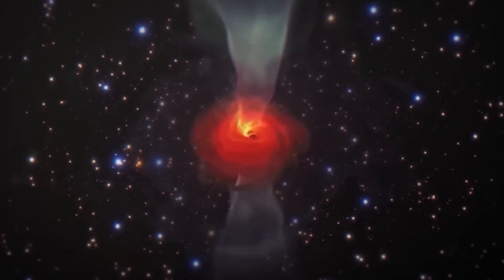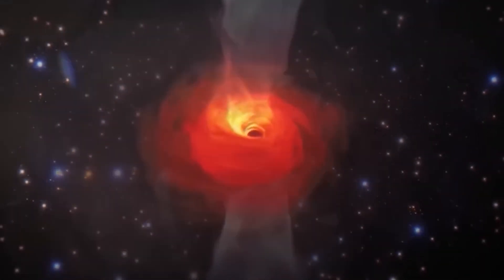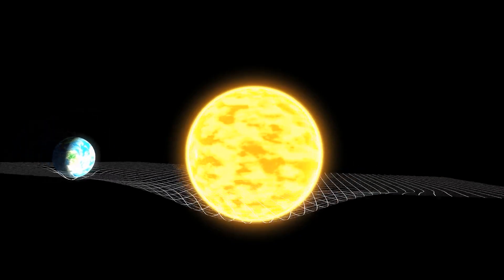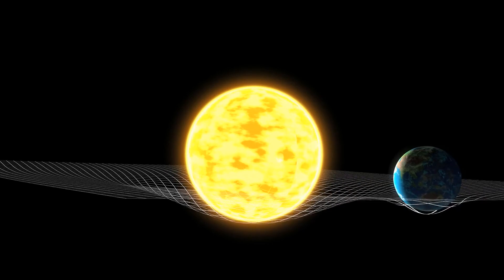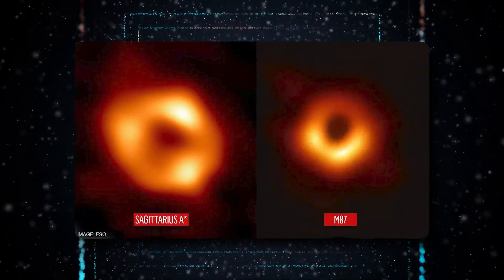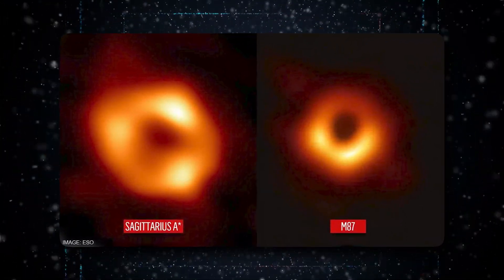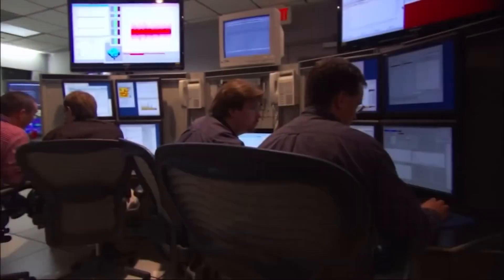The discovery of the black hole in M87 and the disk around it has given scientists an incredible opportunity to test Einstein's theory of general relativity, which explains how gravity works on a cosmic scale. By studying both Sagittarius A and M87, scientists can compare and learn more about these mysterious objects.